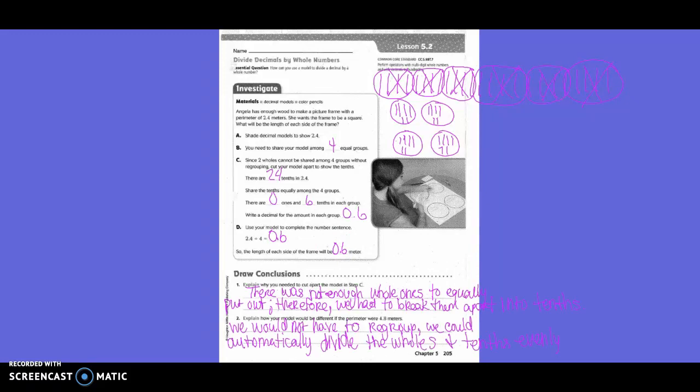Draw a conclusion. Explain why you needed to cut apart the model in step C. There was not enough whole ones to equally put out; therefore, we had to break them apart into tenths. Number two: explain how your model would be different if the perimeter were 4 and 8 tenths meters. We would not have to regroup — we could automatically divide the wholes and tenths evenly.